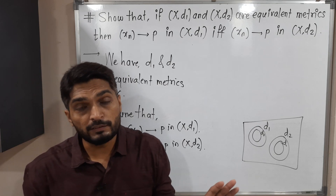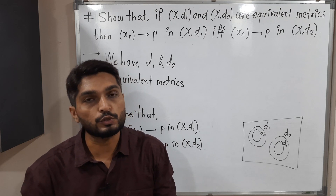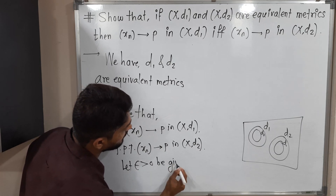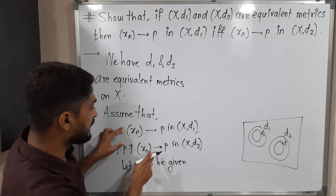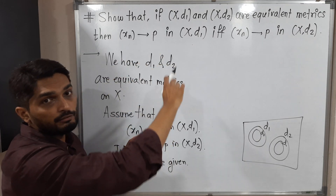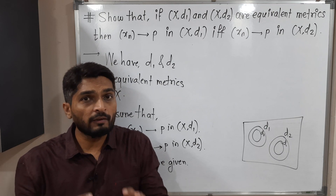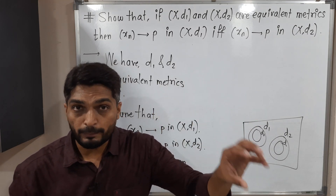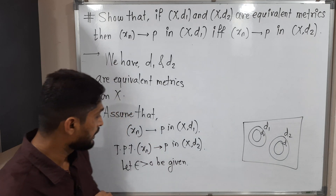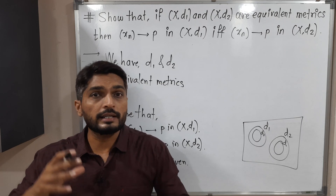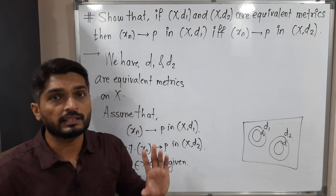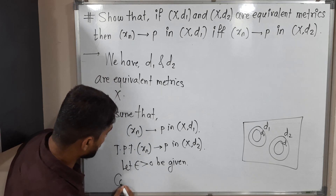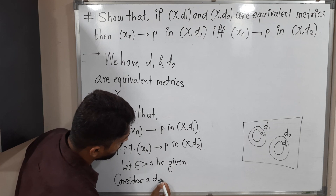So we are familiar with the definition of convergent sequence — epsilon is used in the definition of a convergent sequence. So let us take one epsilon first. Let epsilon greater than 0 be given. This is the given information, and the main given information is D1 and D2 are equivalent metrics. At any cost we have to generate some D1 open ball or D2 open ball and use the given thing. So right now we have one epsilon, and I am going to consider one D2 open ball.